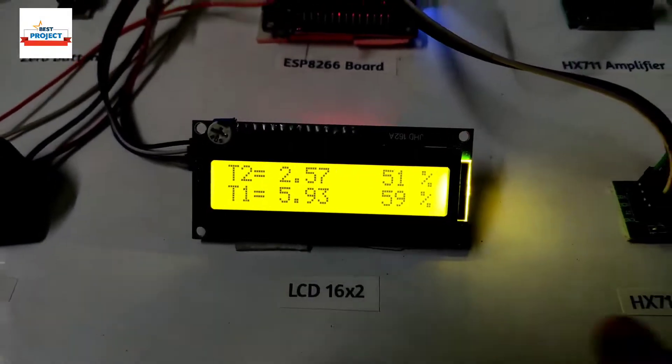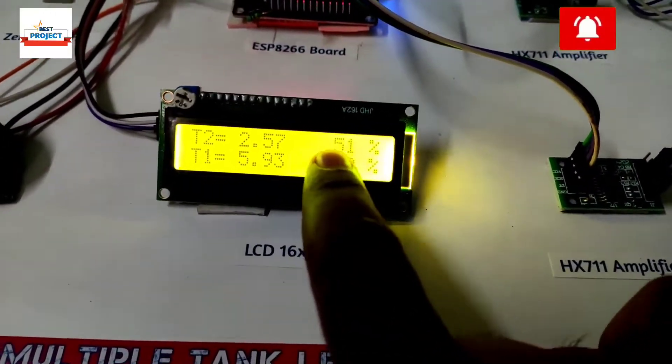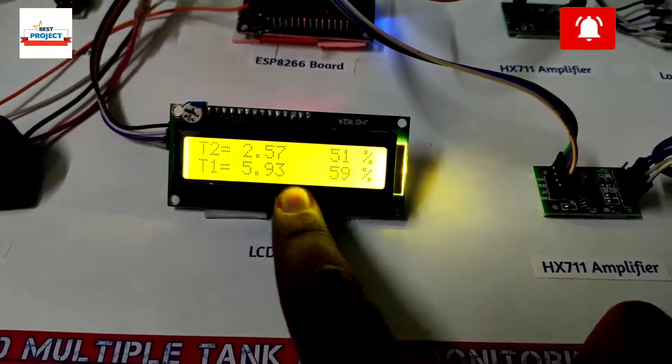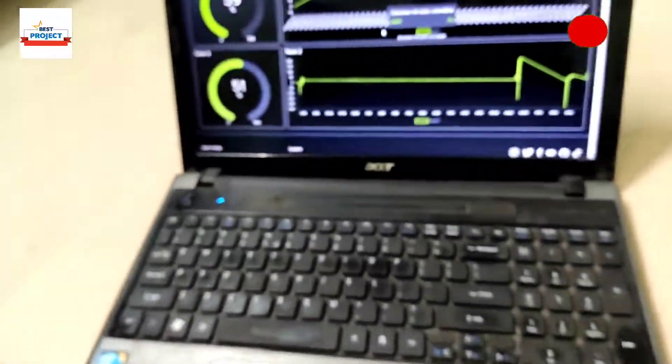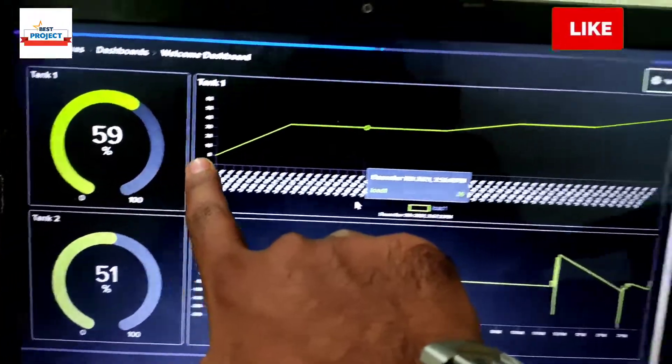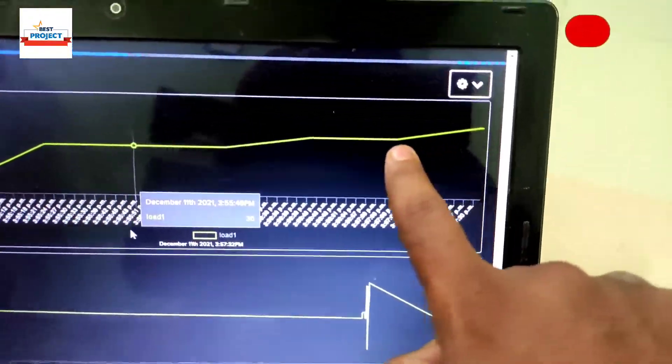The value should be increased. The smaller tank is 51% and the bigger tank is 59%, along with the weight in kilograms. At the same time, you can see it on the IoT server, so our model is working very well.